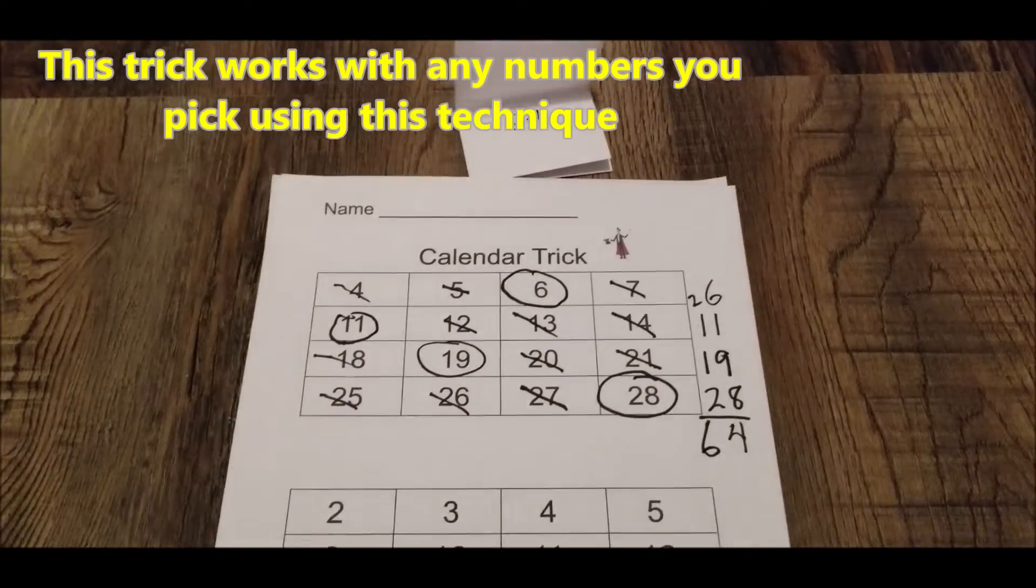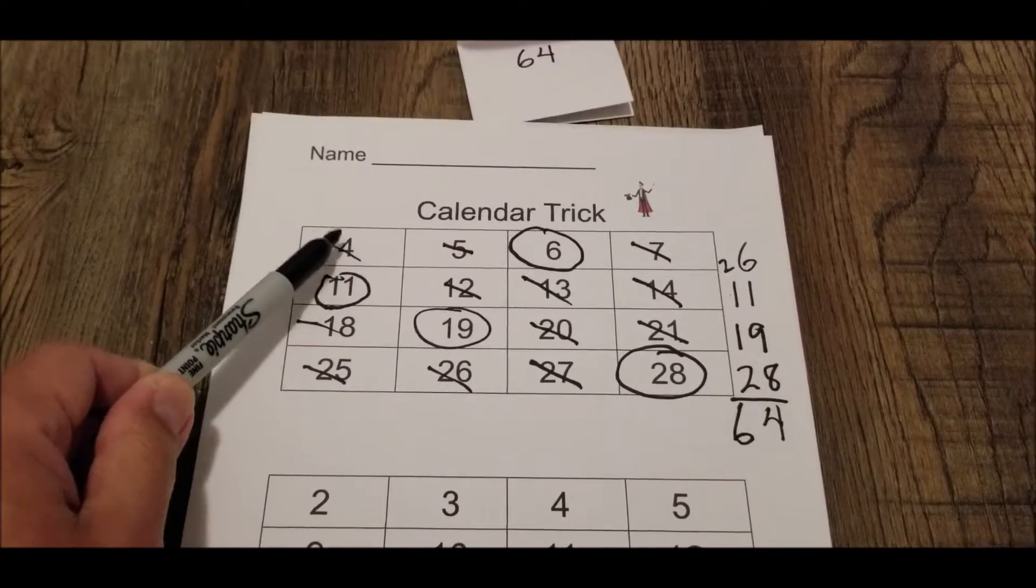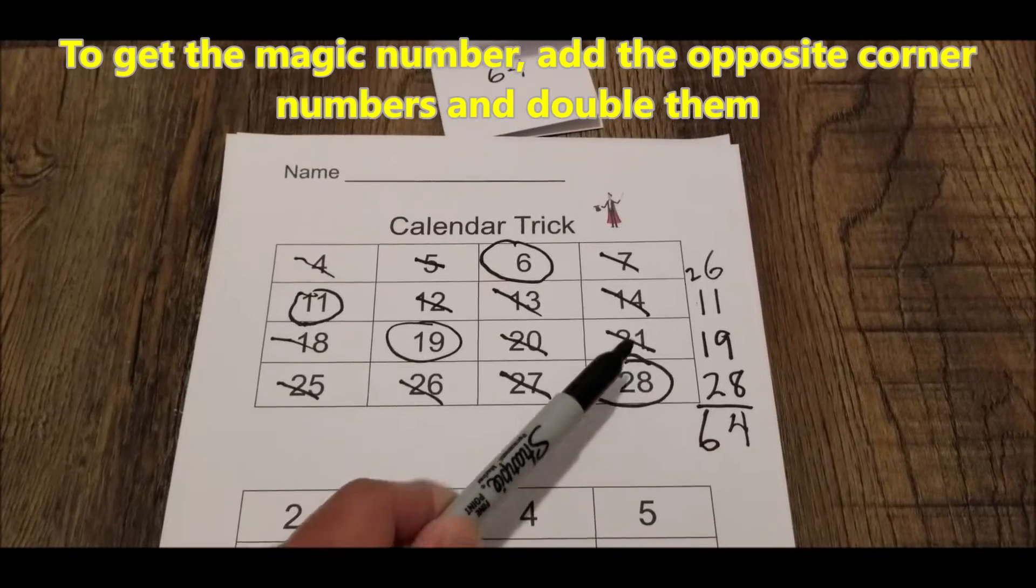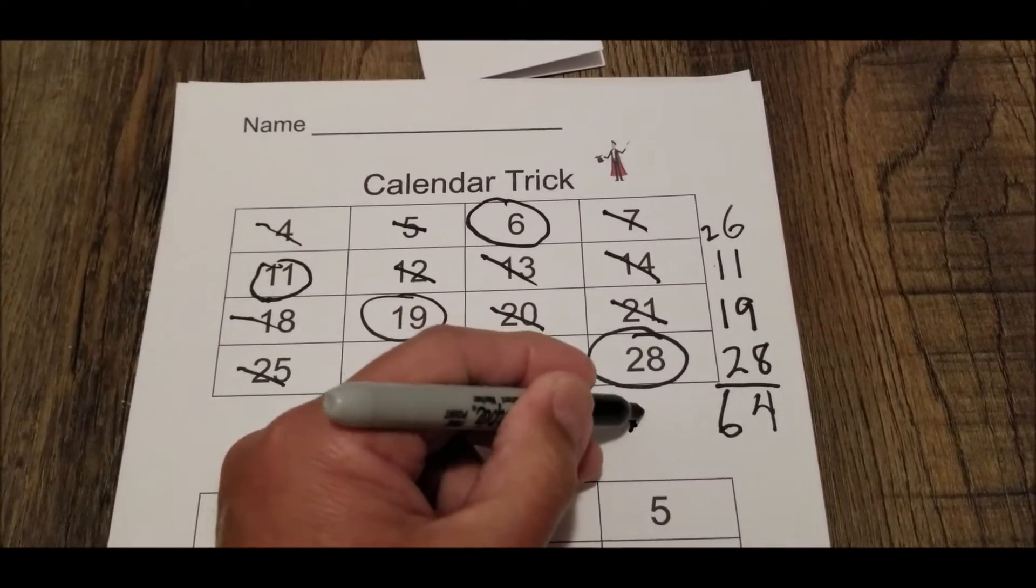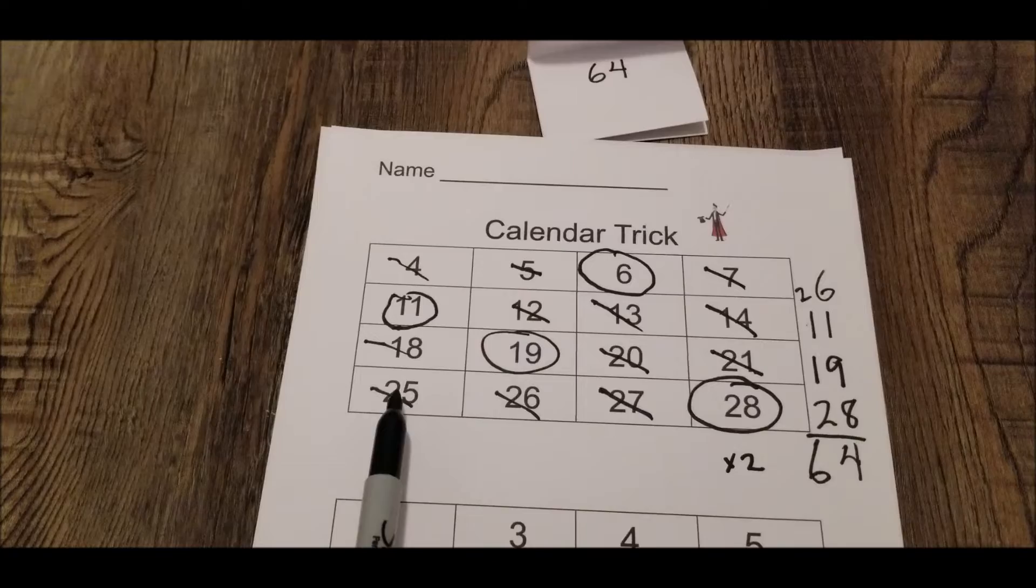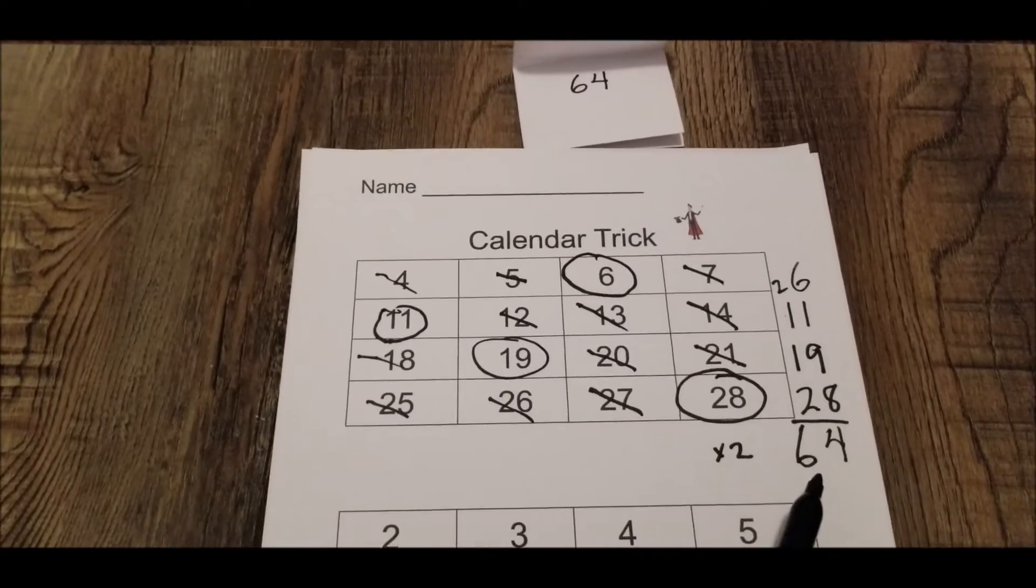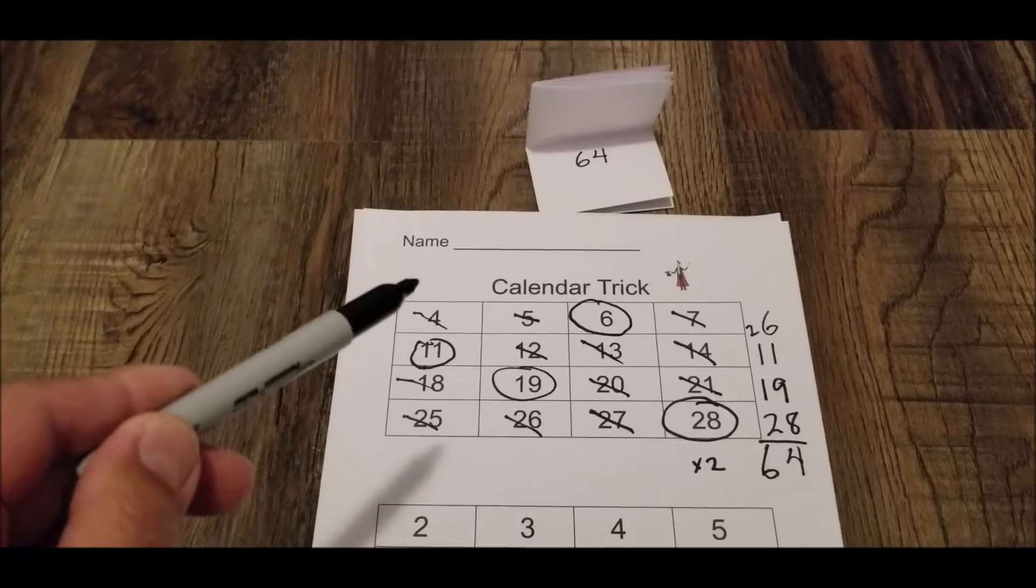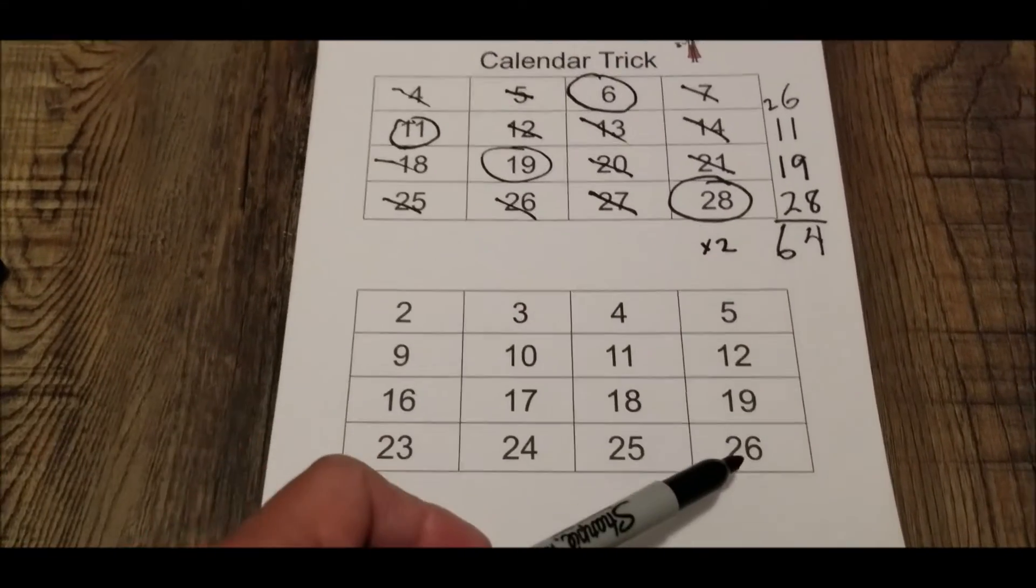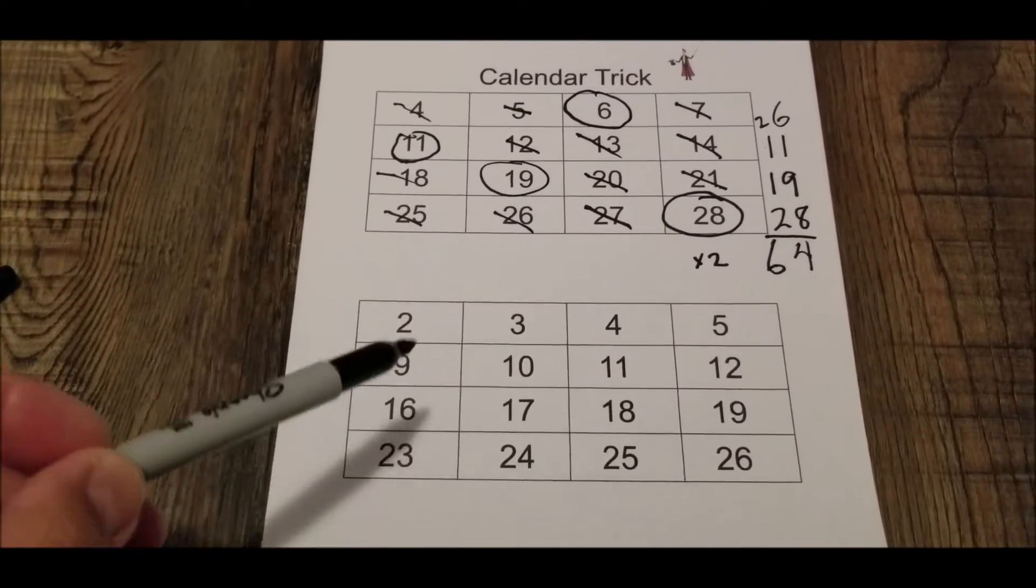And so here is how I knew it was going to be 64. You can basically just take the two corner numbers. So four and 28 is 32 and just double it. And that's going to give you the magic number. Or you can just add up the corner numbers. And if you notice the corner numbers, the opposite is seven plus 25. That's 32. Double 32 and we get 64. So that is how you do the calendar trick. So you can do the same thing down here, but the magic number is going to be different because the corner numbers are different. So 26 plus two is 28. Double that. The magic number down here is going to be 56.